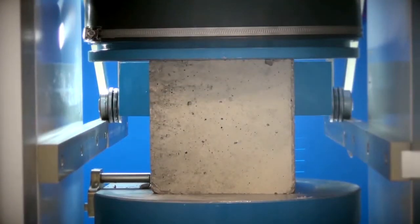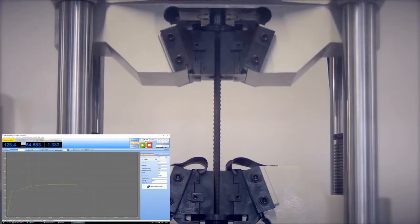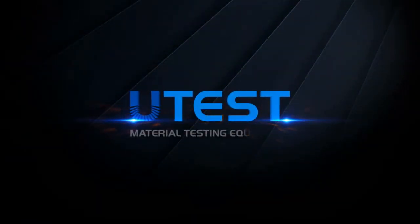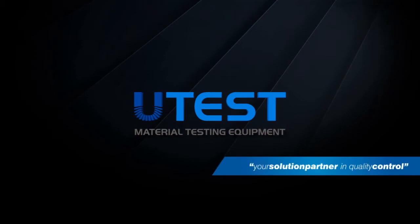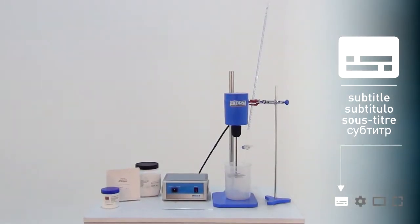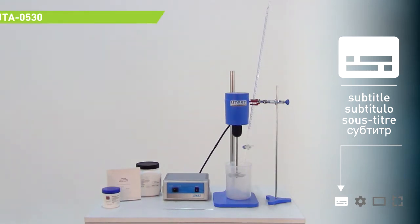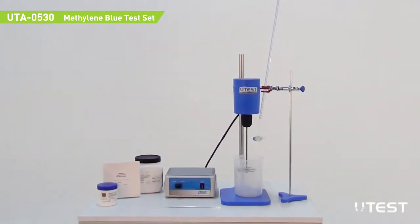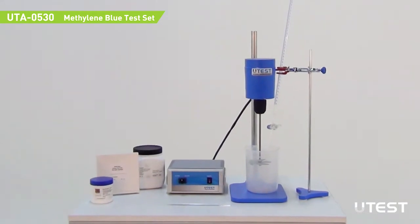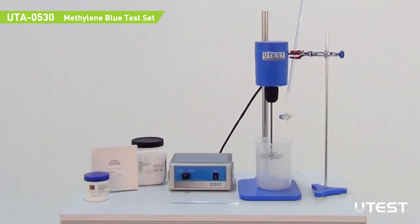U-Test is a leading global player in the construction materials test equipment sector, providing equipment and services in all areas. U-Test UTA-0530 Methylene Blue Test Set is used for determining clay content in the fines fraction of aggregates.